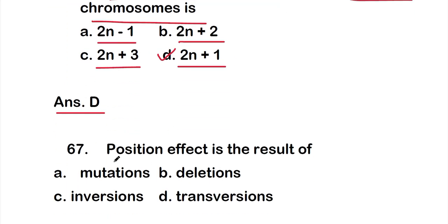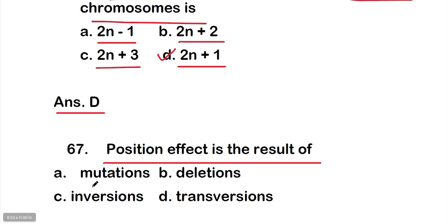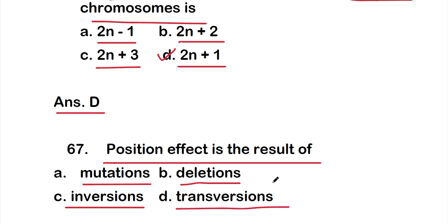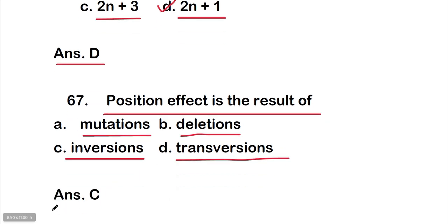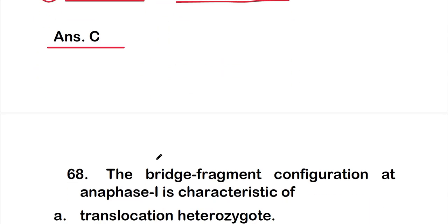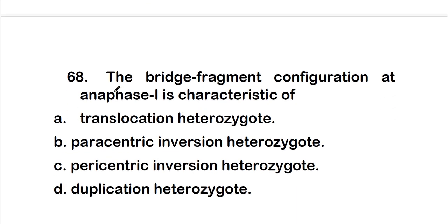Question 67: position effect is the result of — Option A: mutations, Option B: deletions, Option C: inversions, Option D: transversions. The right answer is Option C — inversions. Position effect is the result of inversions.